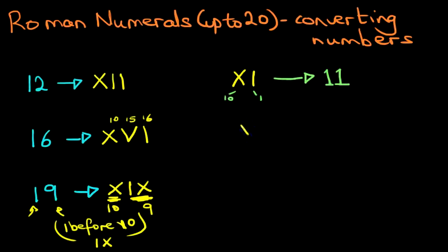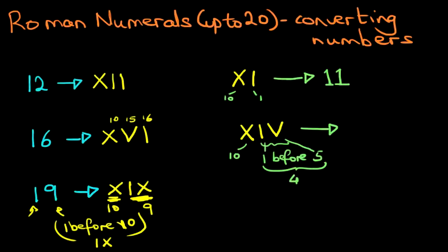How about the next one? We have XIV. Now what is that in numbers? Well, the X is 10. The I appears first before V. So this is 1 before 5, which is 4. Therefore we have 10 and 4 is 14. Just try to work through it slowly and you will figure it out.